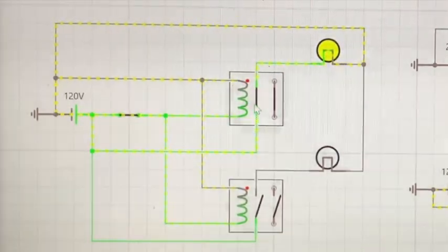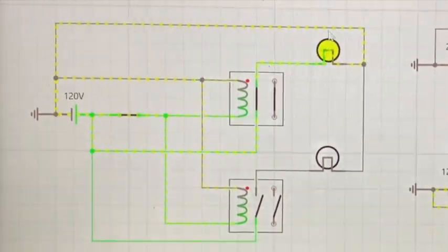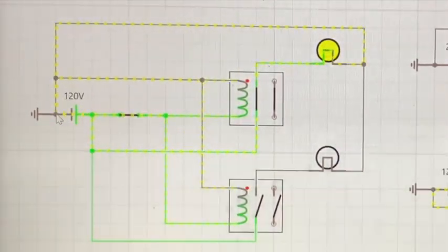120 volts goes through the relay, flows through the light, and then the neutral returns it back down to the neutral bar.